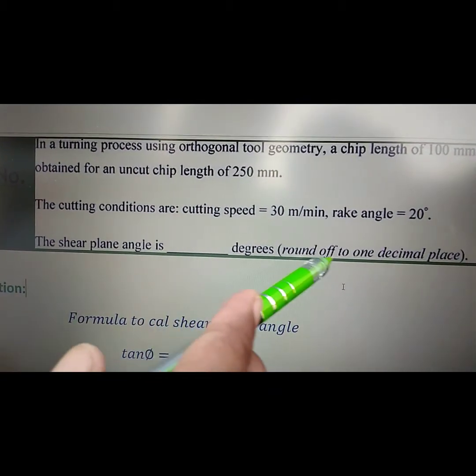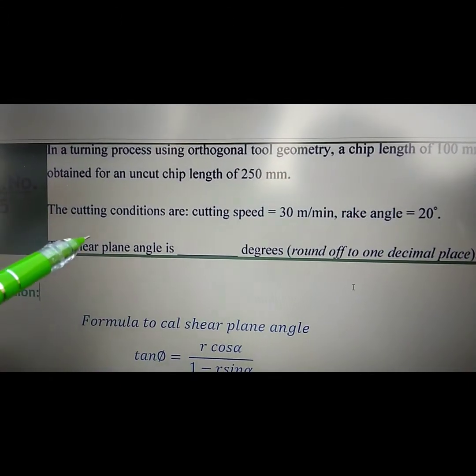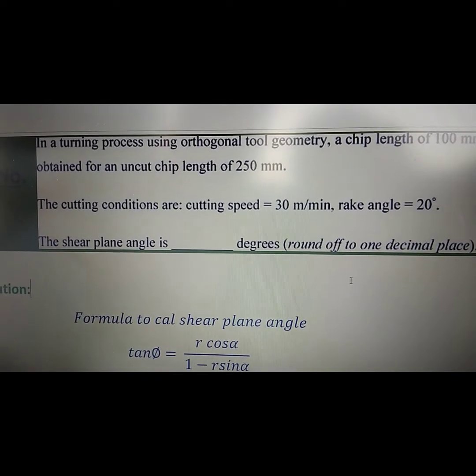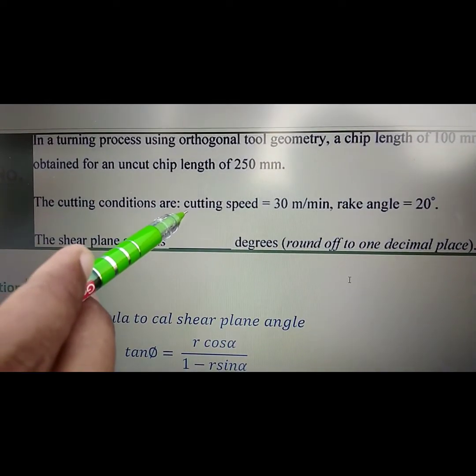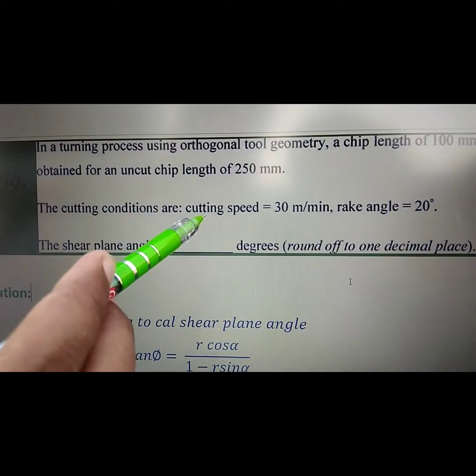The shear plane angle is blank degrees, round off to one decimal place. This is a turning process where we have to calculate the shear plane angle. There is an extra term in the question which is cutting speed. Don't get confused by this term because we don't need it while calculating the shear plane angle.